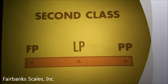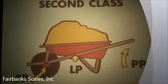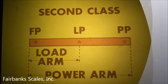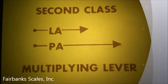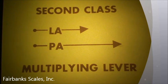A second class lever has the load point between the fulcrum and the power point. A wheelbarrow is a good example of a second class lever. Since the load point is between the fulcrum point and the power point, the power arm will always be longer than the load arm, meaning a second class lever will always have a multiple greater than one. By definition, a second class lever can only be a multiplying lever.